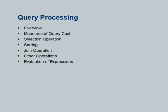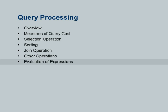We have a very small amount of time left for query processing. There are several issues here, and for lack of time I am not going to cover all of them. The first part is how do you measure the cost of a query, then how do you implement various operations and estimate their cost, and then given an expression with multiple operations, how do you evaluate the whole expression. I am going to sample bits of each of these and skip other parts.